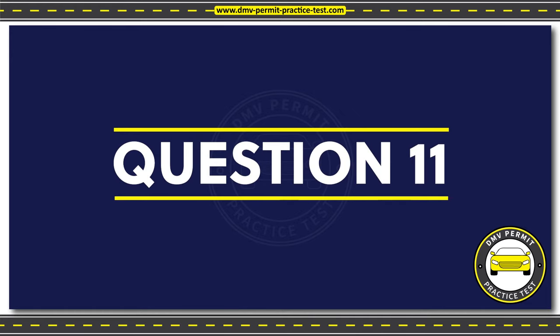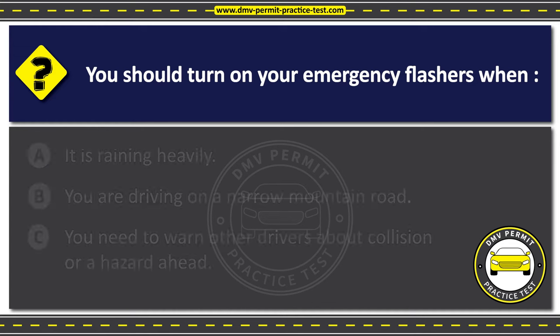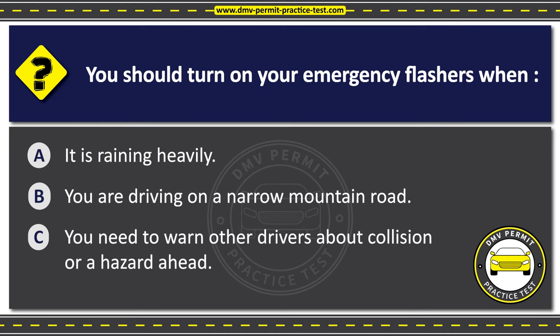Question 11. You should turn on your emergency flashers when: Option A: It is raining heavily. Option B: You are driving on a narrow mountain road. Option C: You need to warn other drivers about a collision or a hazard ahead. The correct answer is Option C. You should turn on your emergency flashers or tap on your brake three or four times when you can see a collision or hazard ahead and want to warn the drivers behind you.